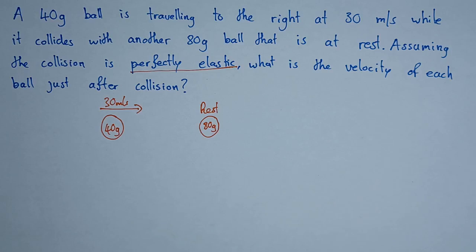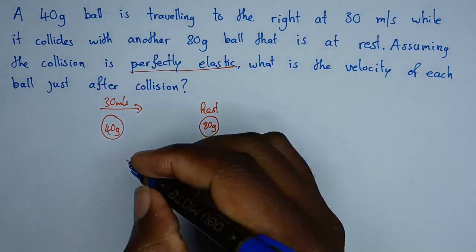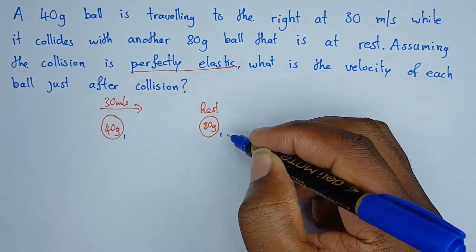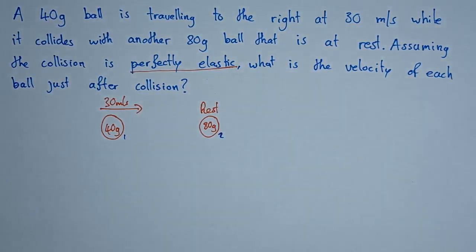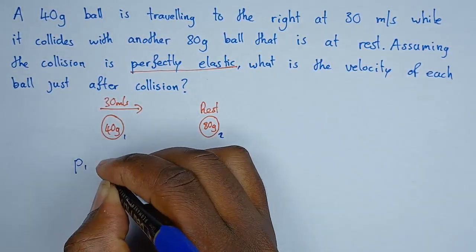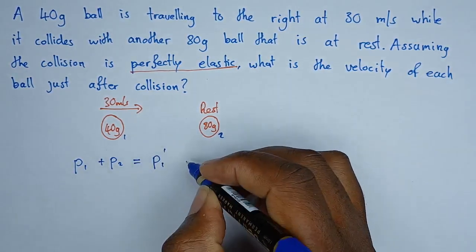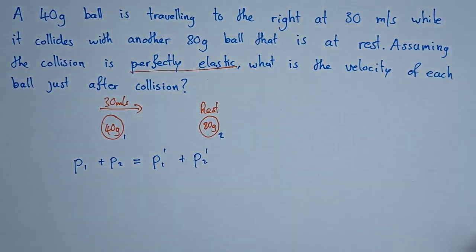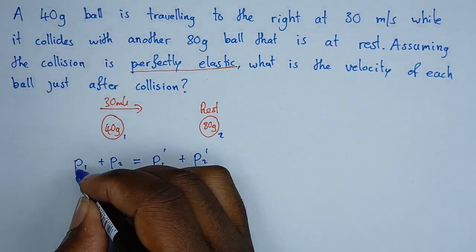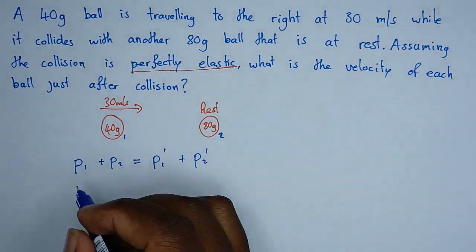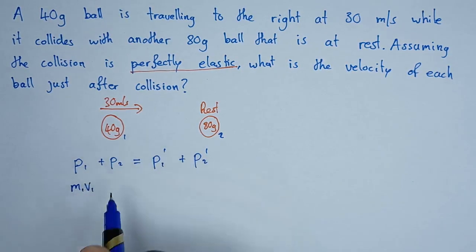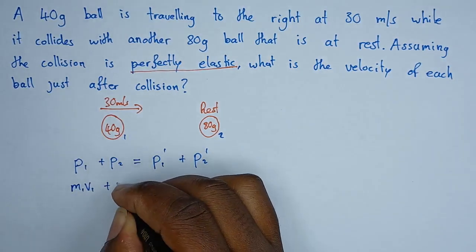From the law of conservation of momentum, the initial momentum before collision equals the final momentum after collision. We have two objects — object one and object two. So momentum of one plus momentum of two, before collision, equals momentum of one prime plus momentum of two prime, where the prime represents after collision. Since momentum is mass times velocity, we have m1v1 plus m2v2 equals m1v1' plus m2v2'.